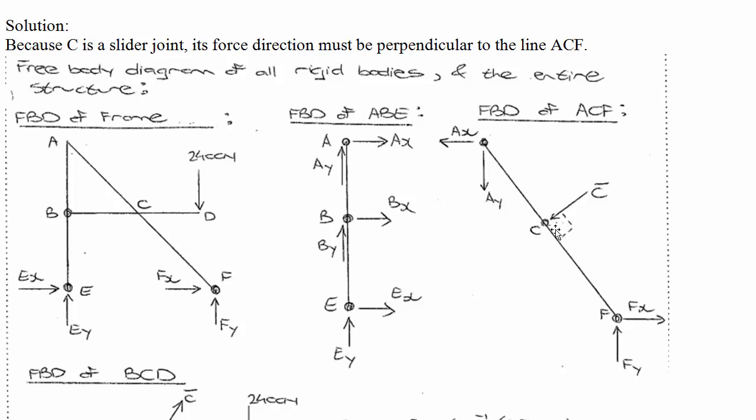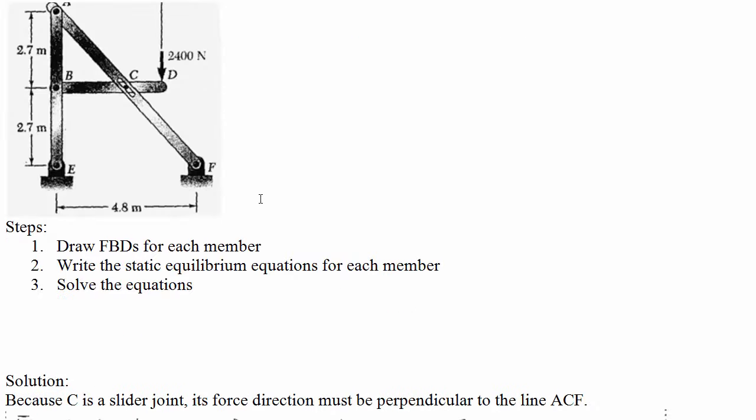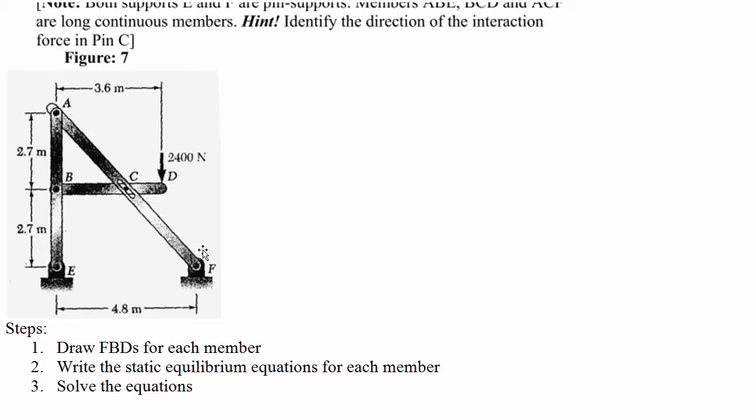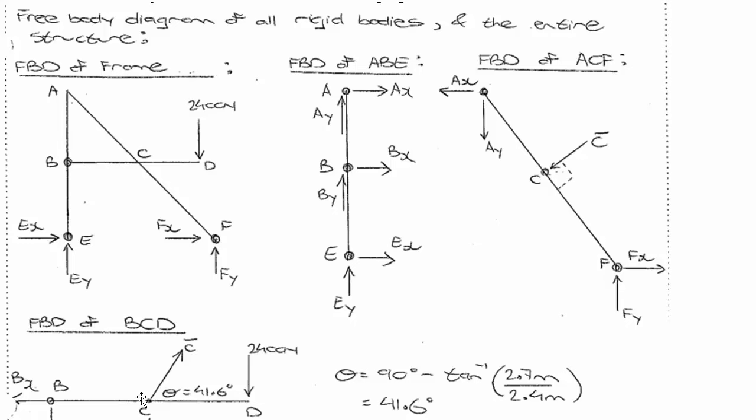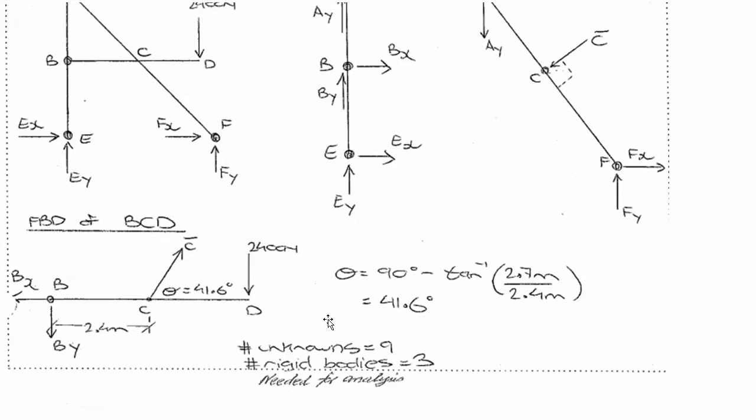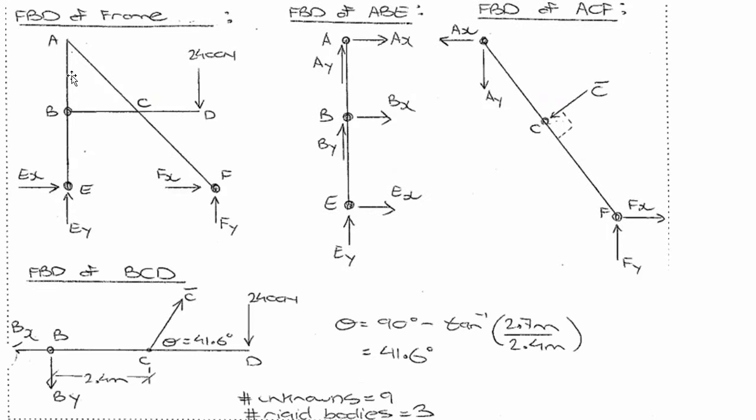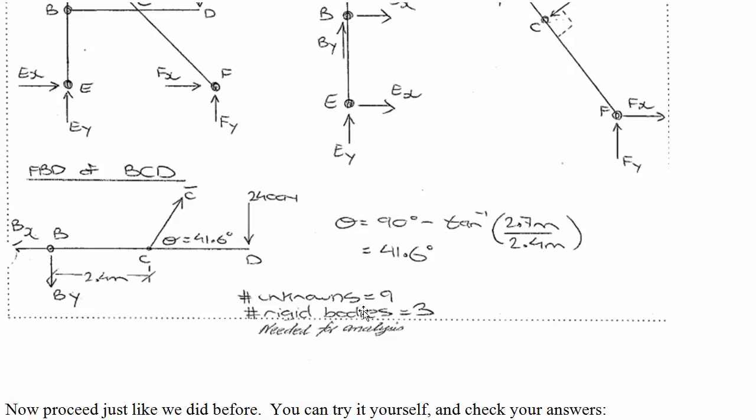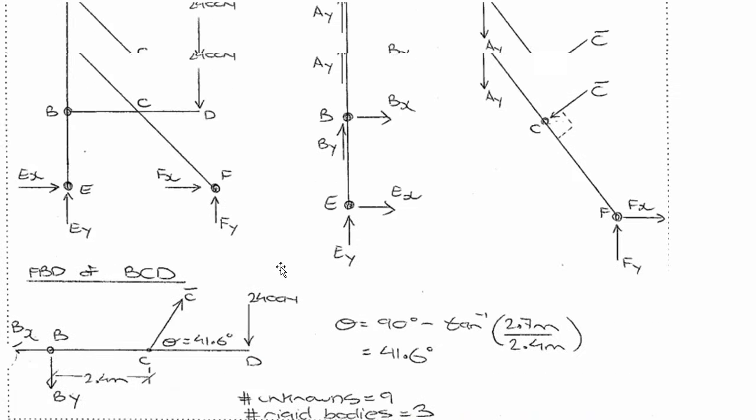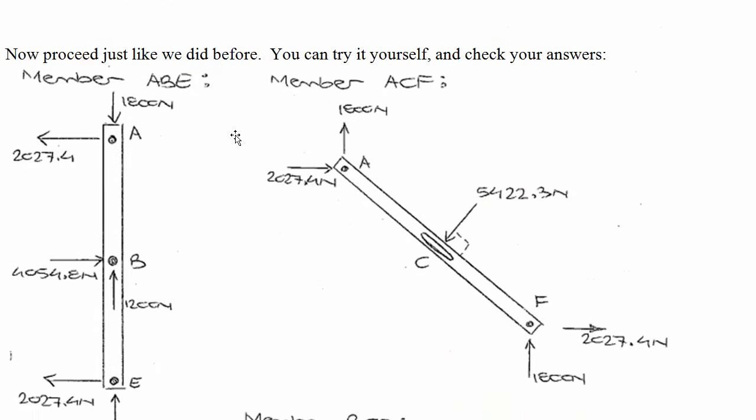So the reaction force at pin C has to be perpendicular to that slider joint because it can't apply force in the direction of the slider joint. So that means the force has to be perpendicular to that. You can use the dimensions on the structure to figure out what way that is and the angle of that force, which turns out to be 41.6 degrees. Then let's see how many unknowns do we have. This is the entire structure. We've got all these different members making up the entire structure. This member here has six forces on it. Then what new forces do we have over here? Seven, eight, nine, and no new forces on BCD. So nine equations in nine unknowns. We can solve it using our force equations. I'm not going to run through this one for you, but you can give it a shot for more practice and here are the solutions.